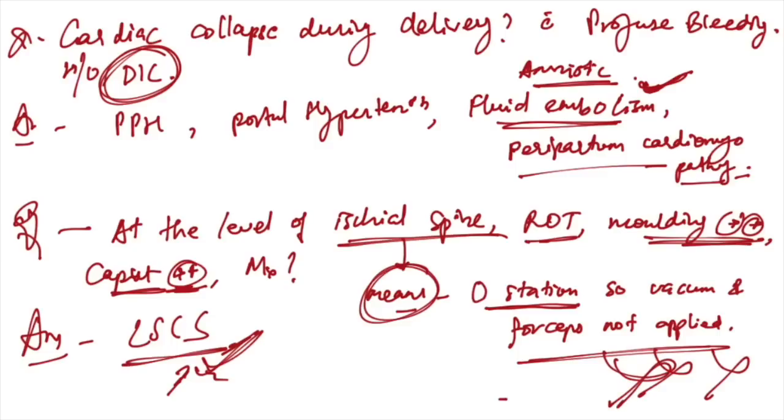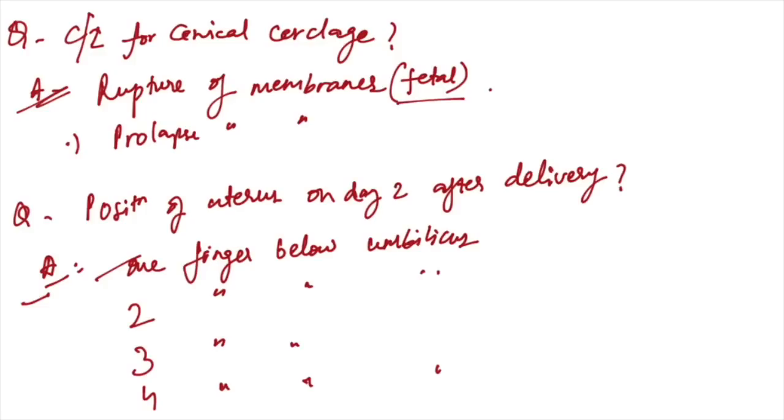Contraindications for cervical cerclage: contraindicated when there is rupture of fetal membranes, not contraindicated in prolapse. Position of uterus on day two after delivery is one finger below umbilicus.